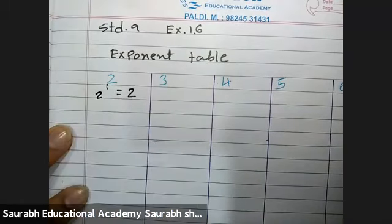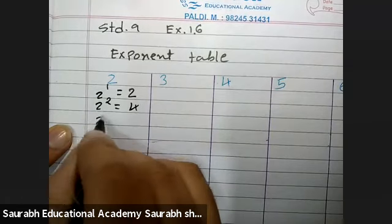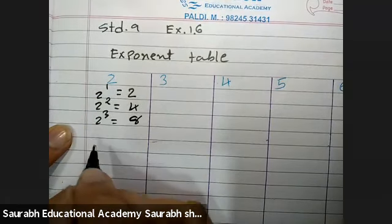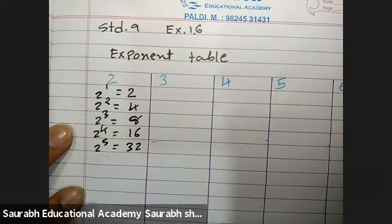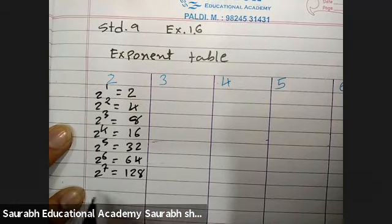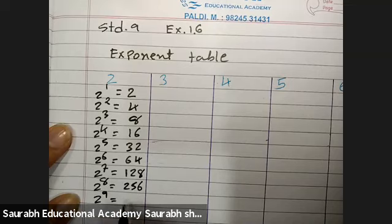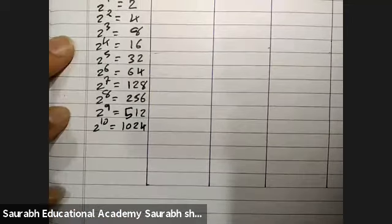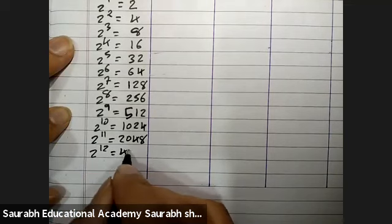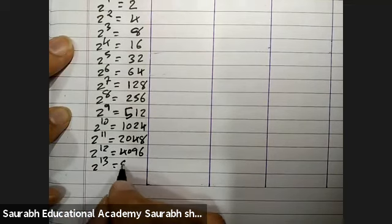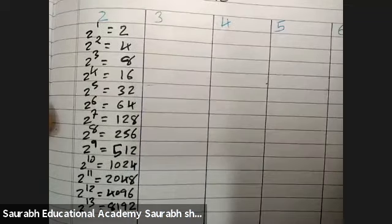Now, 2 raise to 1 is 2, 2 raise to 2 is 4, 2 raise to 3 is 8, 2 raise to 4 is 16, 2 raise to 5 is 32, 2 raise to 6 is 64, 2 raise to 7 is 128, 2 raise to 8 is 256, 2 raise to 9 is 512, 2 raise to 10 is 1024, 2 raise to 11 is 2048, 2 raise to 12 is 4096, 2 raise to 13 is 8192. This is the exponent table of 2.